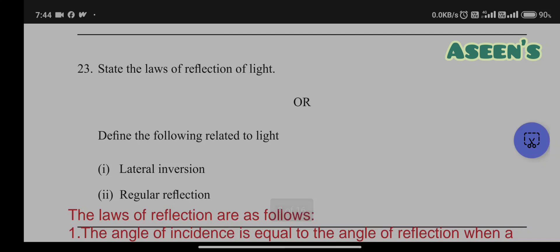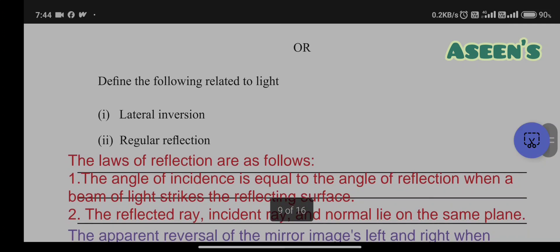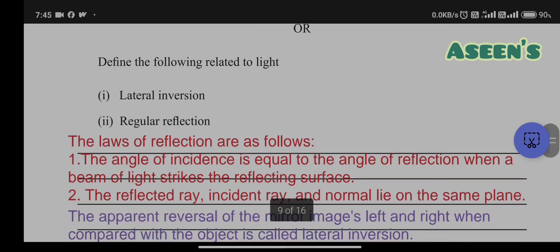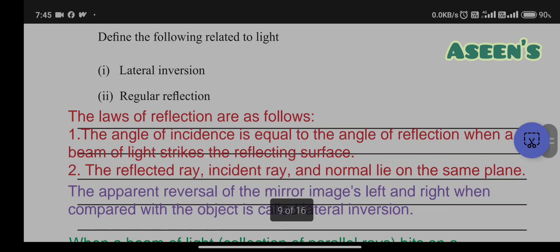State the laws of reflection of light. This is already available in your textbooks. The other one is to define lateral inversion and regular reflection. Laws of reflection: First, the angle of incidence is equal to angle of reflection when a beam of light strikes the reflecting surface. Second, reflected ray, incident ray, and normal lie on the same plane.